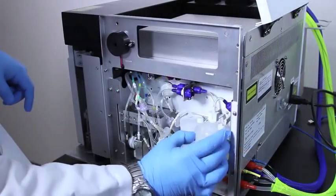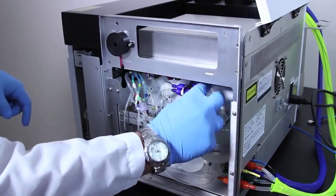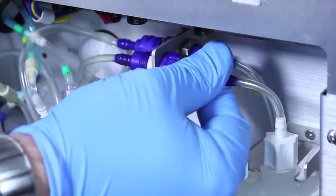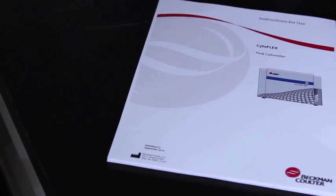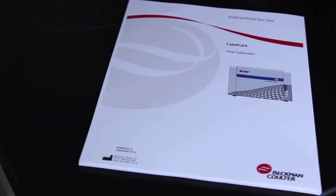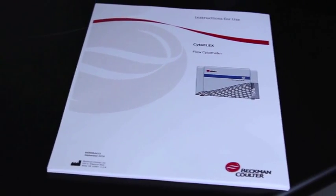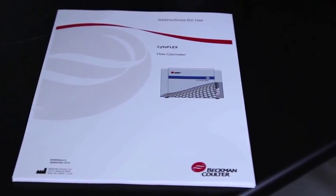Replace the new sheath filter by reconnecting the quick connectors located at both the top and bottom of the sheath filter area. Please refer to your IFU for detailed instructions on how to bleed the air out of the new sheath filter. This ends the sheath filter replacement procedure.